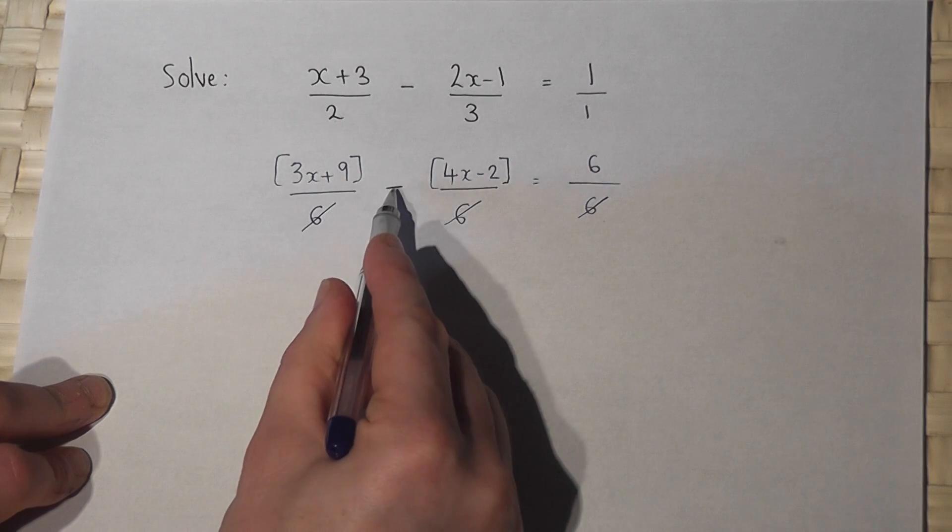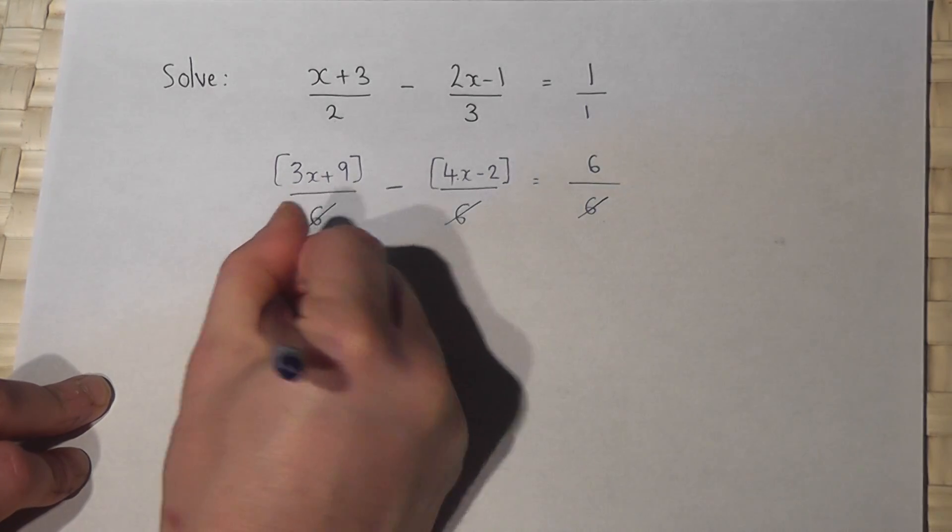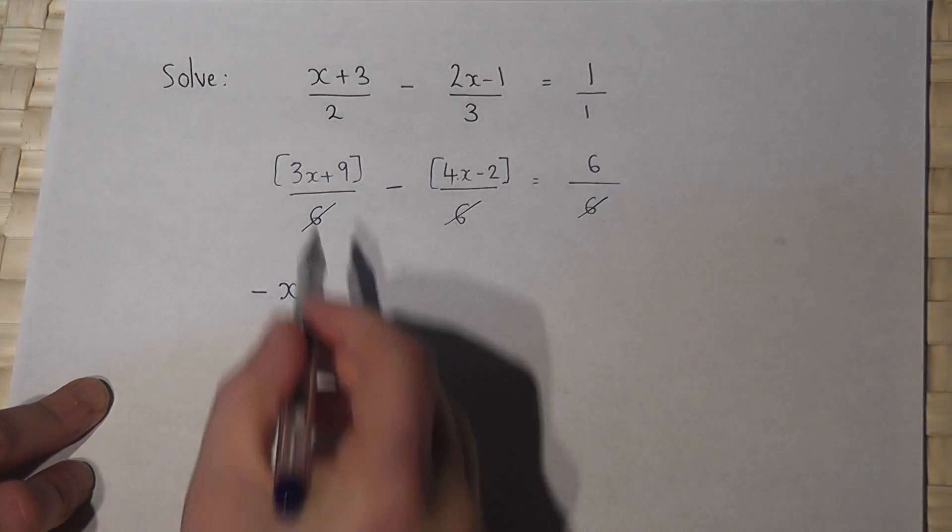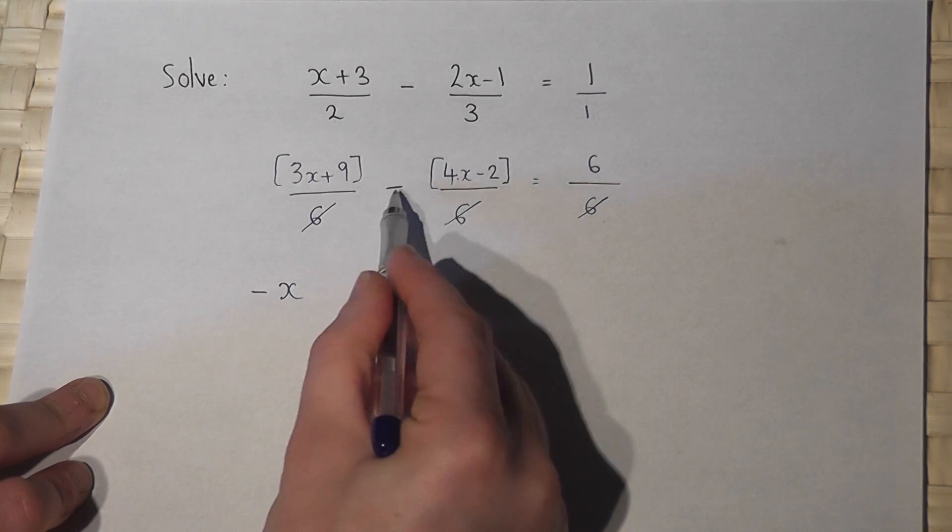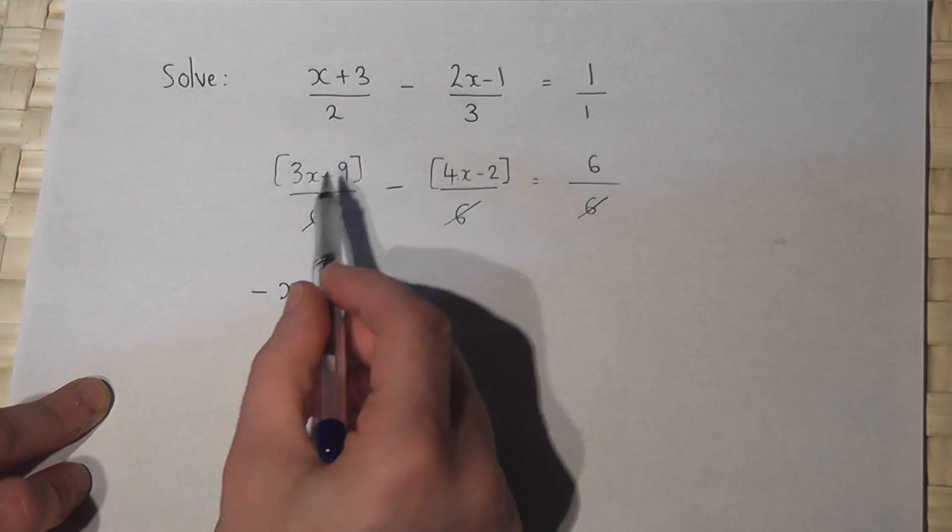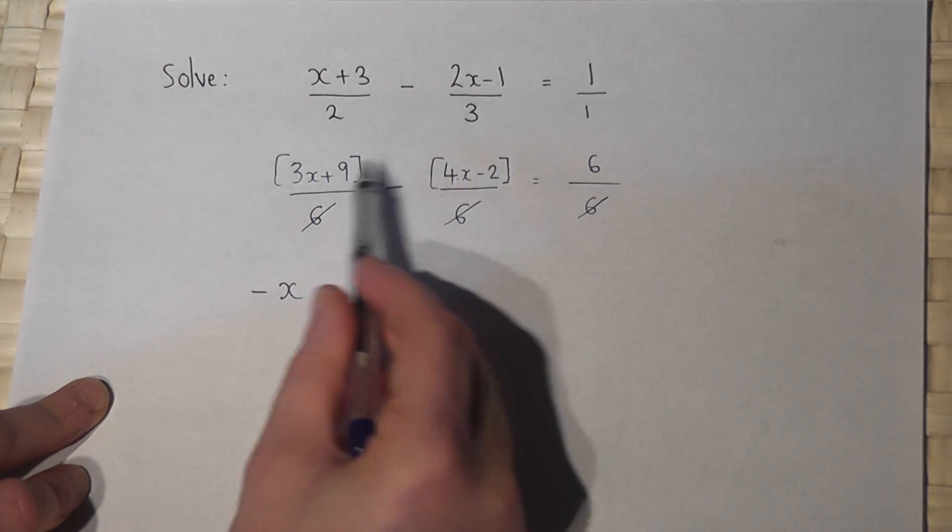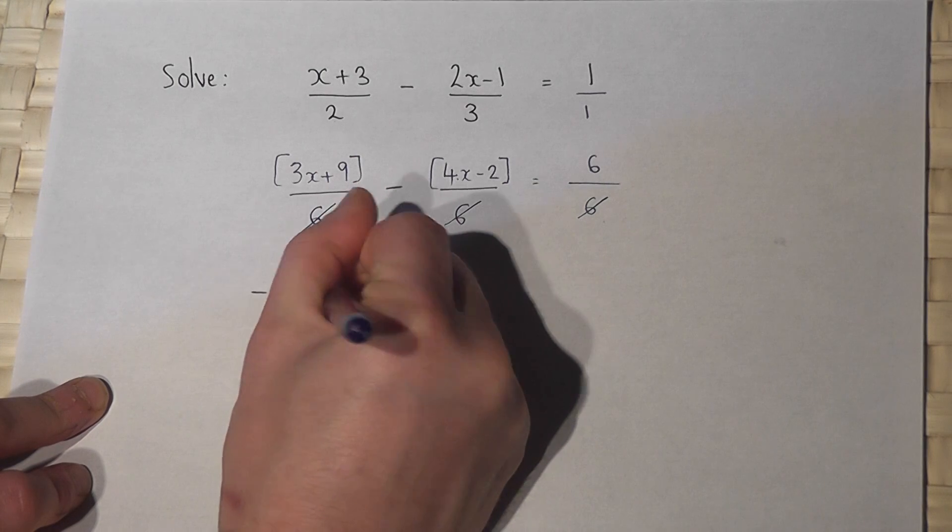Now three x take away four x is minus x. But a nine take away a minus two, these two negatives become positive. They cancel out. So nine take minus two is nine plus two, which equals 11.